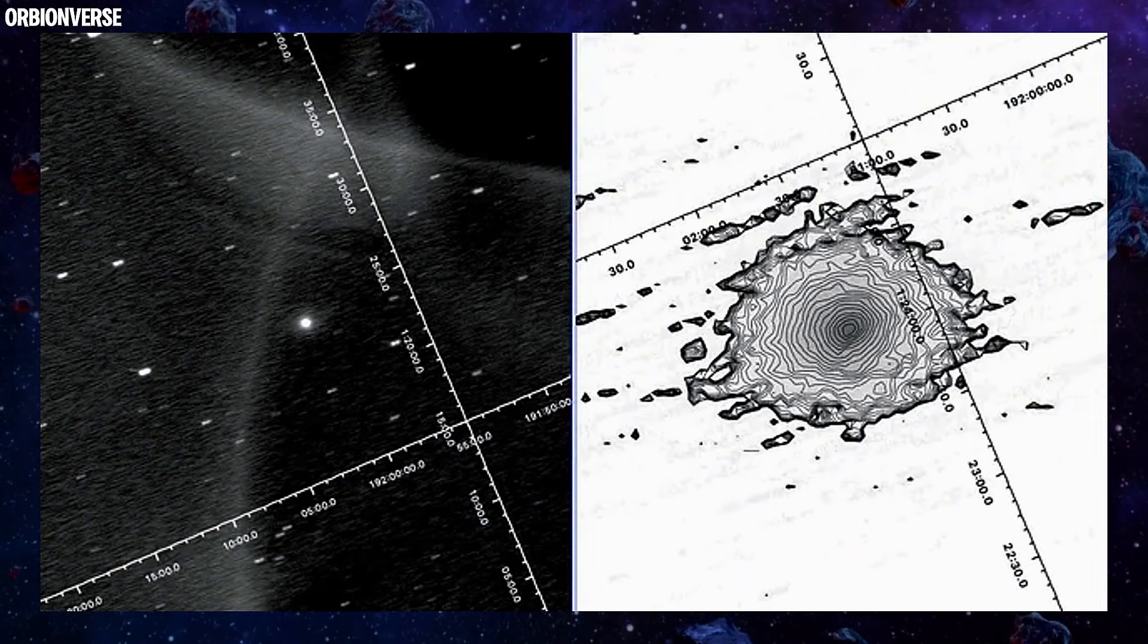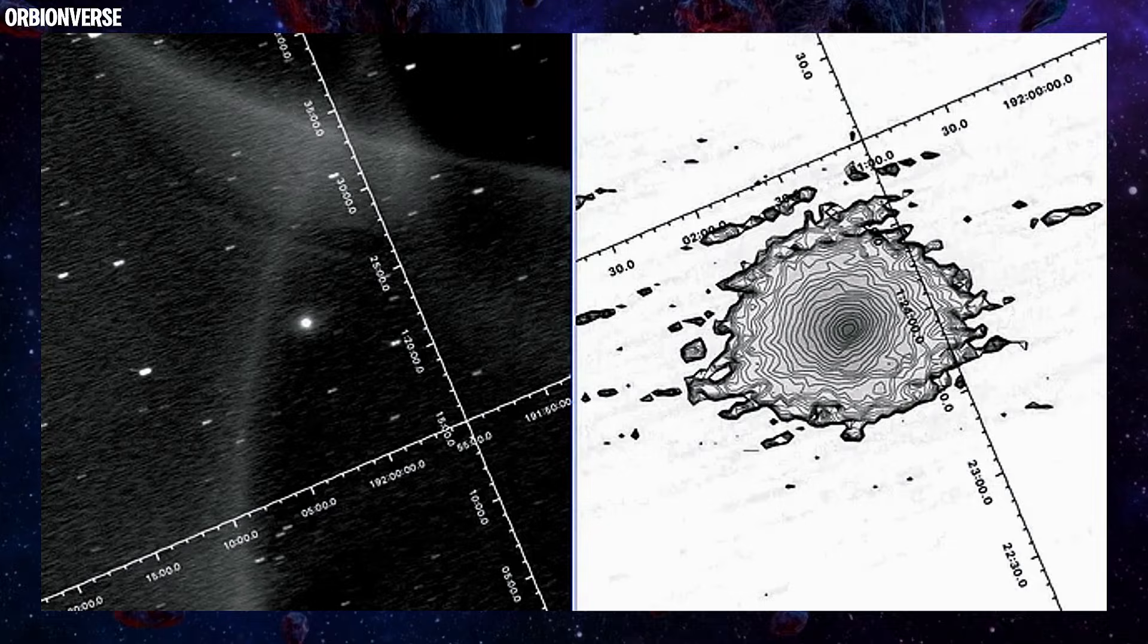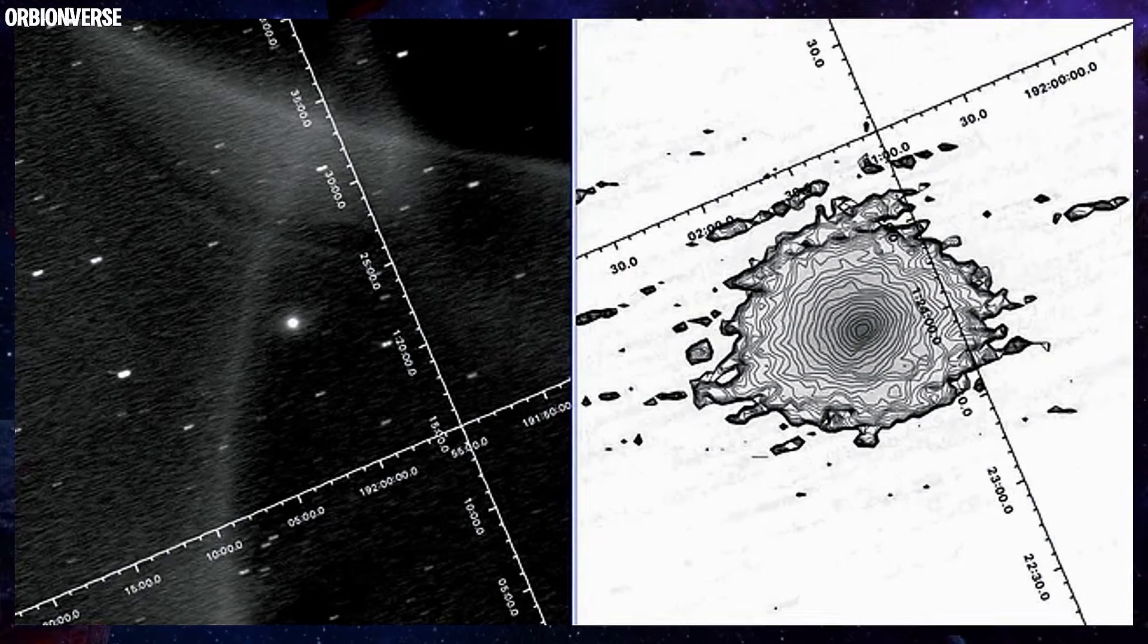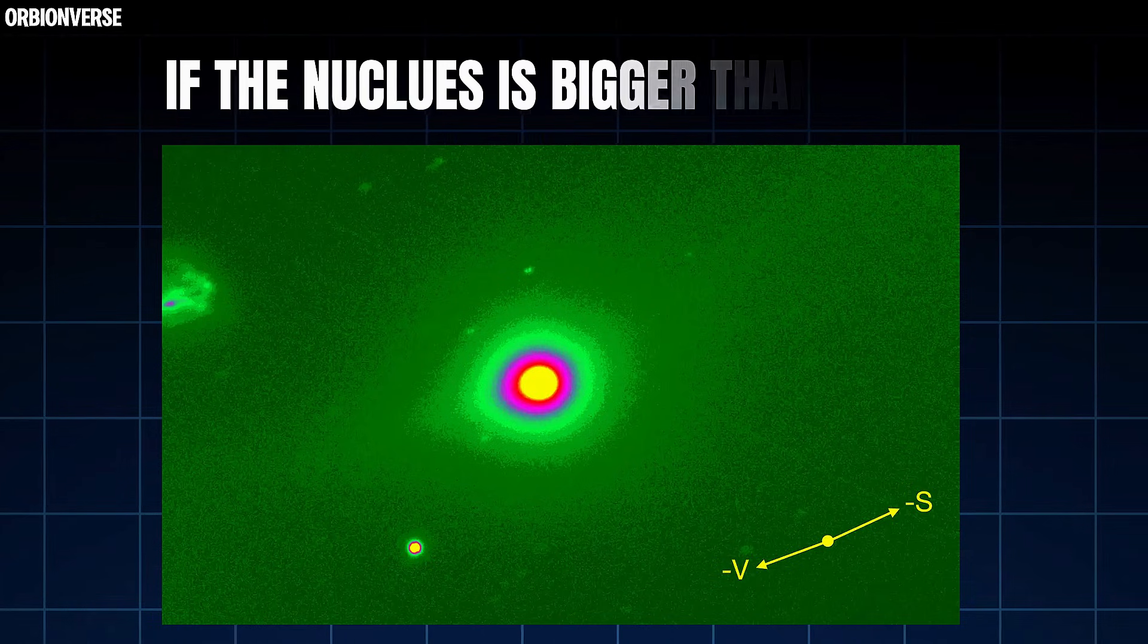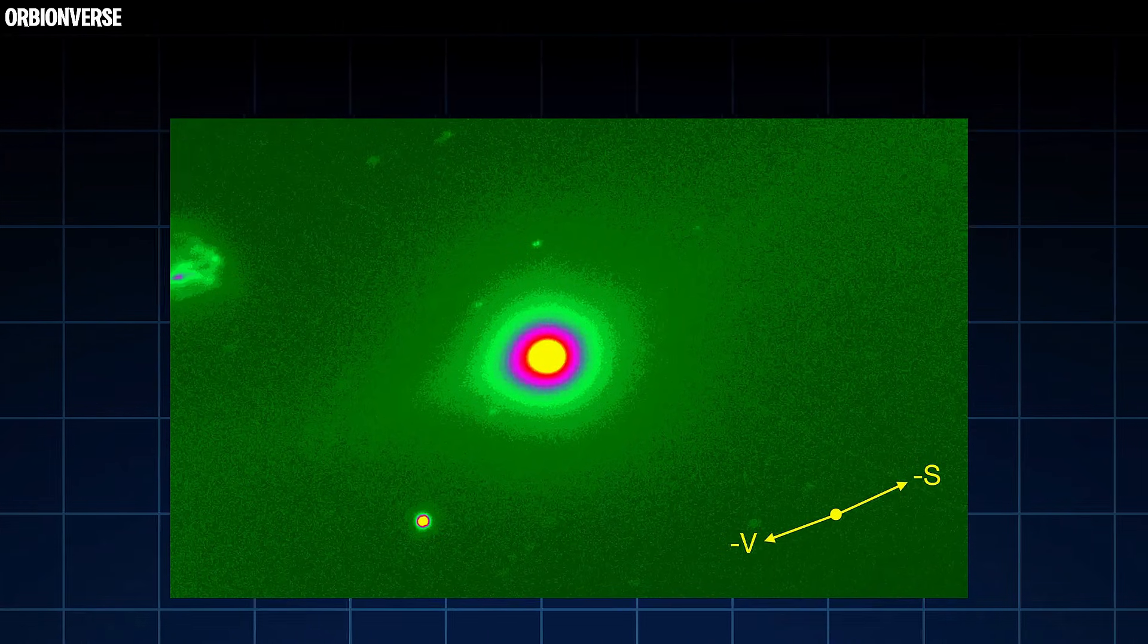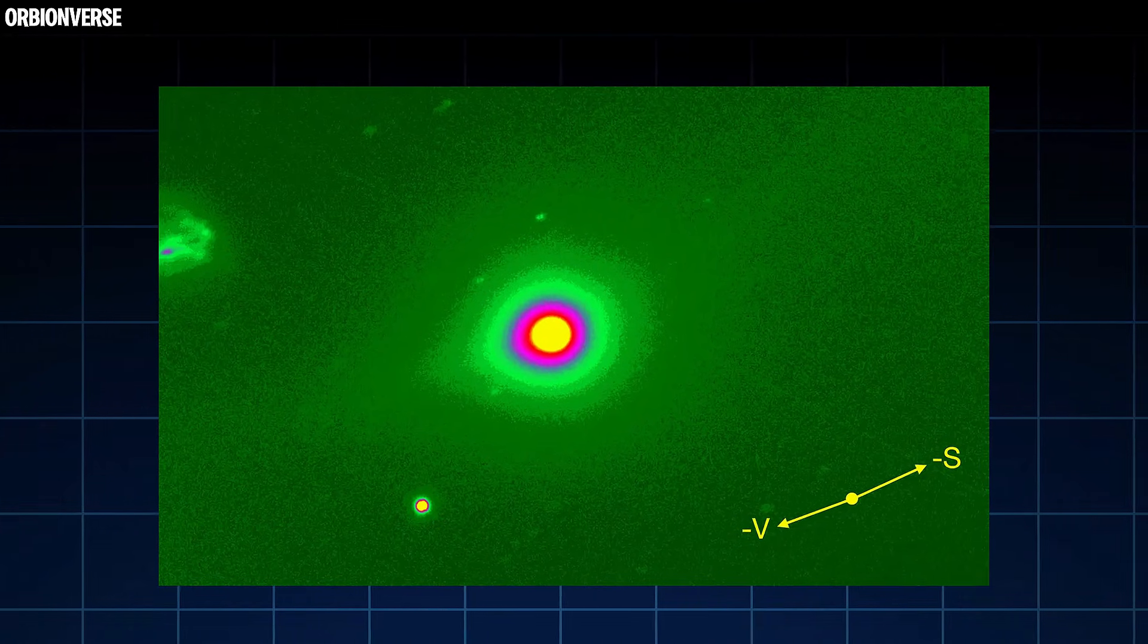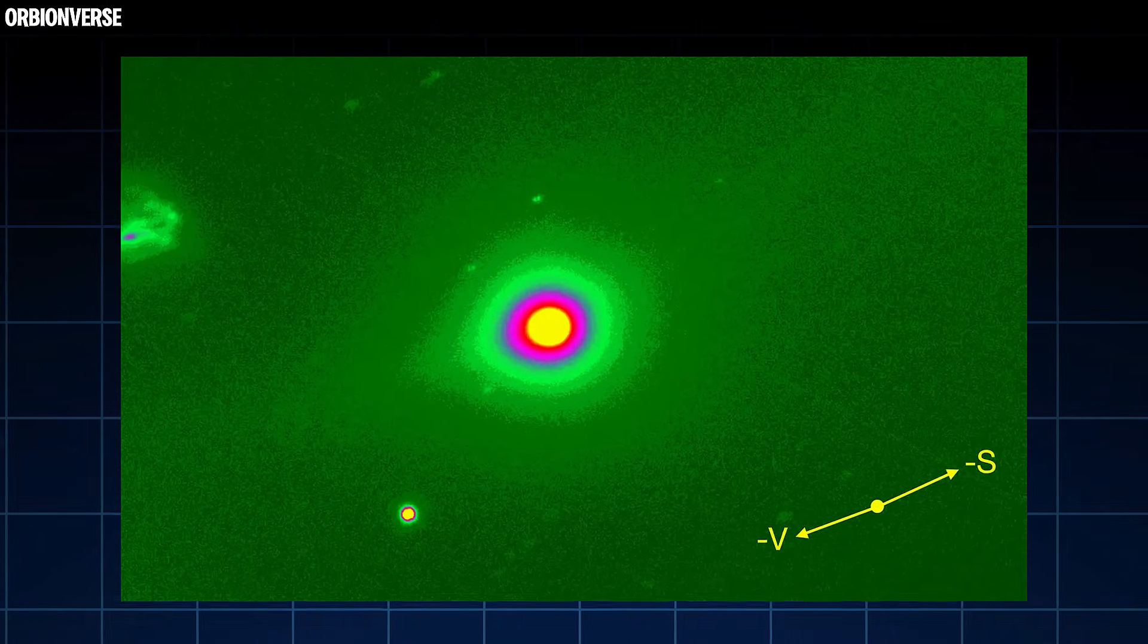NASA itself admits they do not know how big the nucleus actually is. They believe the core could be as small as a few thousand feet, or as large as a couple of miles. But here's the strange part. If the nucleus were bigger than 5.5 kilometers, it should create a visible brightness bump in the center of all images. But it doesn't.